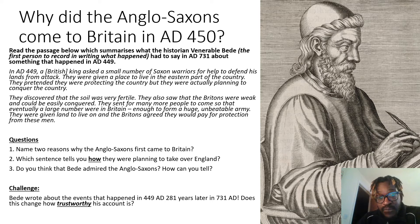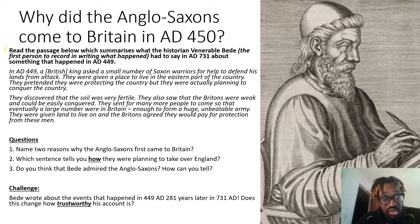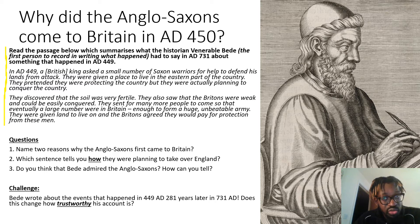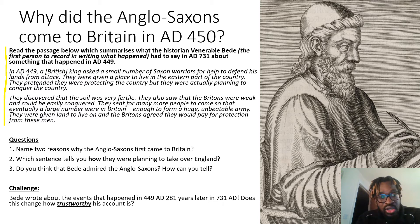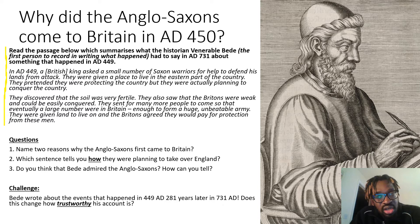Then read this slide and again pause the video. The question asks: why did the Anglo-Saxons come to Britain in AD 450? After the Romans go, why do the Anglo-Saxons come? You're going to read the passage which summarizes what the historian Venerable Bede — the first person to record in writing what happened — had to say in AD 731 about something that happened in AD 449. Note that this writer wrote about events 281 years after they happened. That doesn't mean it's not true, but there are questions about how much you can trust him. Think about why a historian would ask, 'Can we trust this account?'